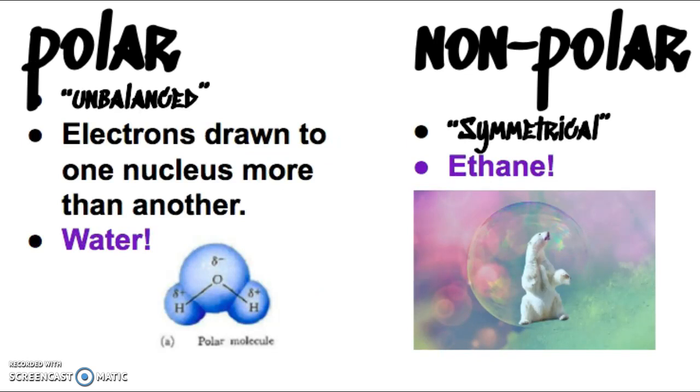Really quickly, let's talk about polar versus nonpolar. A polar molecule is where one part of the molecule is more negative than the other part of the molecule, and we can say this is unbalanced. What happens is the electrons are drawn to one nucleus a little bit more than the other and we have this unbalanced charge. Generally, polar molecules are going to be hydrophilic and nonpolar molecules are going to be hydrophobic. A nonpolar bond is symmetrical, meaning the charge is balanced. Ethane is an example of this. Almost all lipids are going to be nonpolar as well.